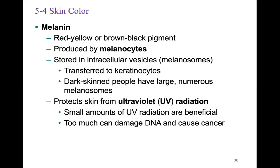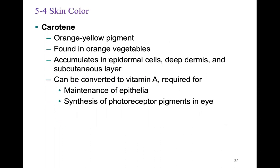Some individuals produce melanin only upon UV exposure, while others constitutively produce melanin, resulting in a darker skin tone. Carotene is an orange to yellow pigment found in carrots and other orange-yellow vegetables. It accumulates in epidermal cells deep within the dermis and subcutaneous layer. Carotene can be converted to vitamin A, which is required for maintenance of epithelial tissue and synthesis of photoreceptor pigments in the eye.